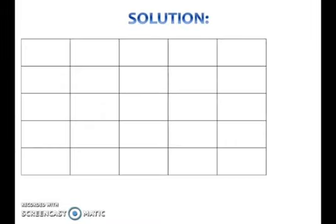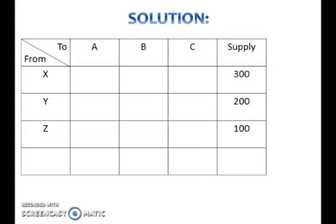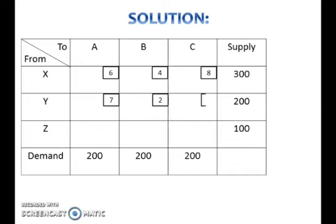To set up a table for this problem, first list out the factories in the first column and the warehouses in the first row. Next, write the supply value from each factory in the last column and the demand value from each warehouse in the last row. Put the transportation costs from each factory to each warehouse in each box in the body of the table.